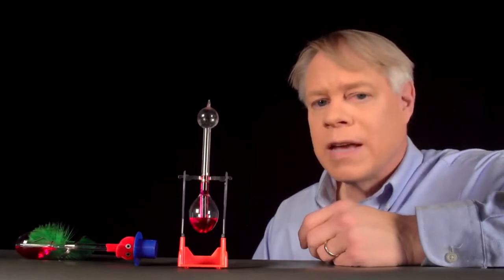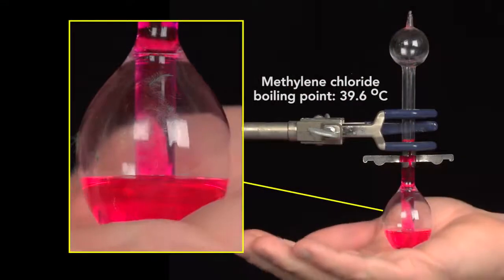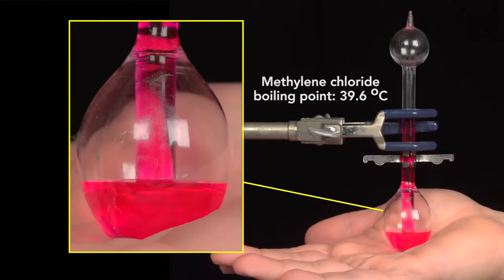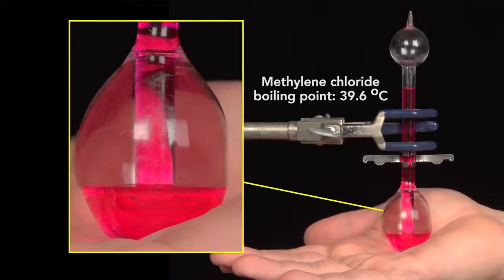Watch what happens as I heat the base of the bird with my hand. You see that liquid level in the base dropping—that's because energy from my hand is converting some of the liquid into vapor—which increases the pressure in this region. And that causes the liquid to rise to the head.